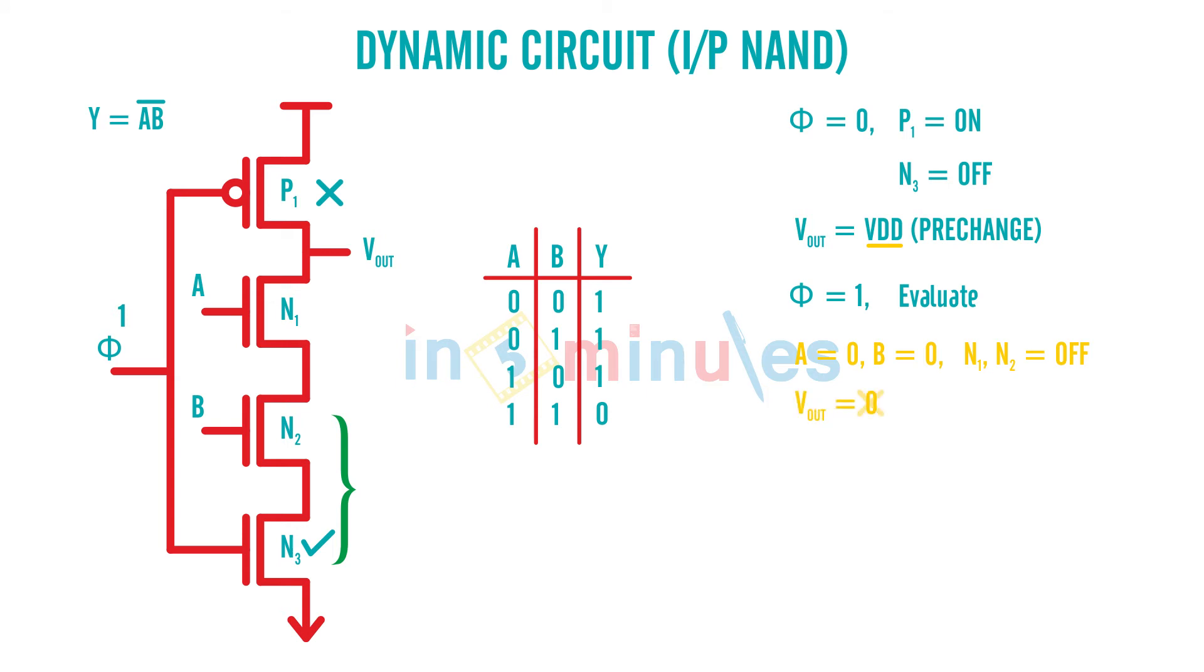Is it? No, the output is going to be 1 that's correct because it was initially charged to VDD and there's no path to discharge so output is equal to 1 which is the first case.